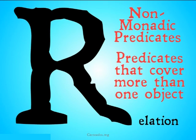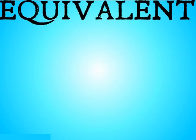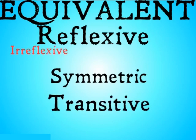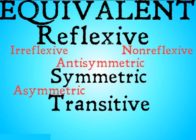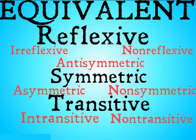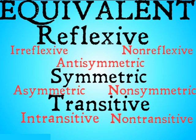The properties of relations we're going to be looking at are equivalent, reflexive, symmetric, transitive, irreflexive, non-reflexive, anti-symmetric, asymmetric, non-symmetric, intransitive, and non-transitive. Note that this isn't an exhaustive list, because there are interesting combinations of these properties that get other names, but these are the basic building blocks. Note also that I'm not going to be talking about the mathematical properties of relations of sets that go by these same names — I'm going to be talking about the logical predicate calculus versions of these properties.